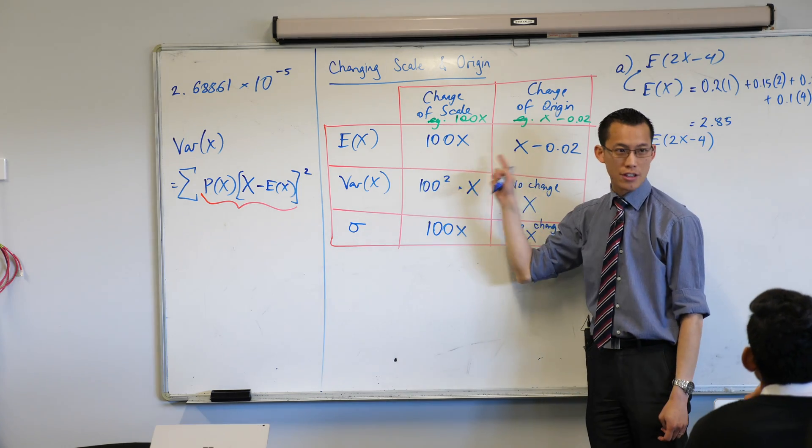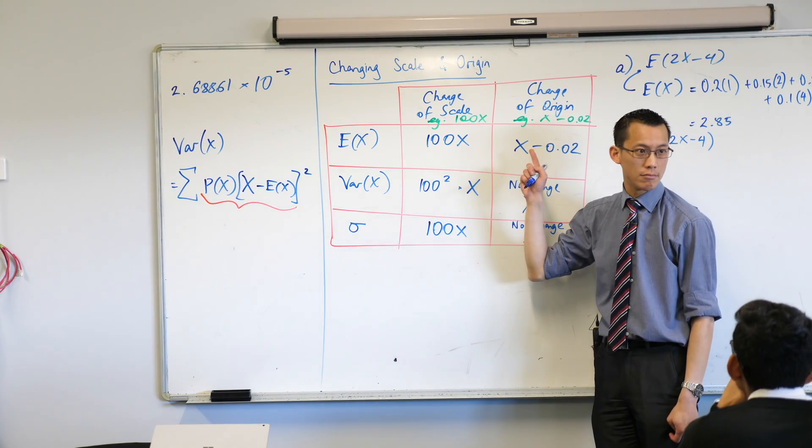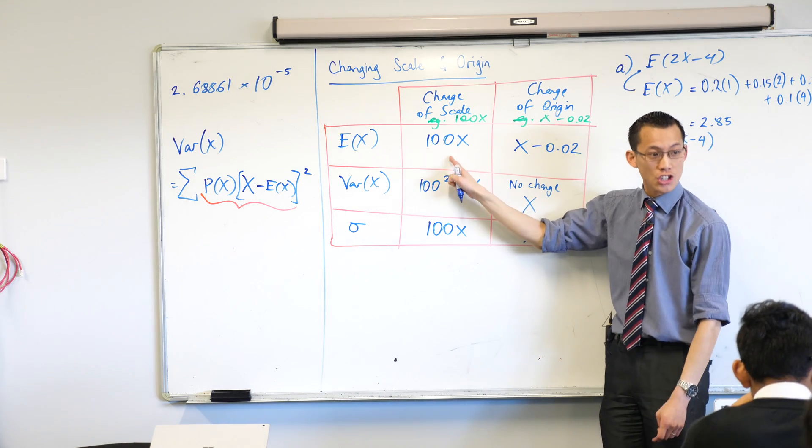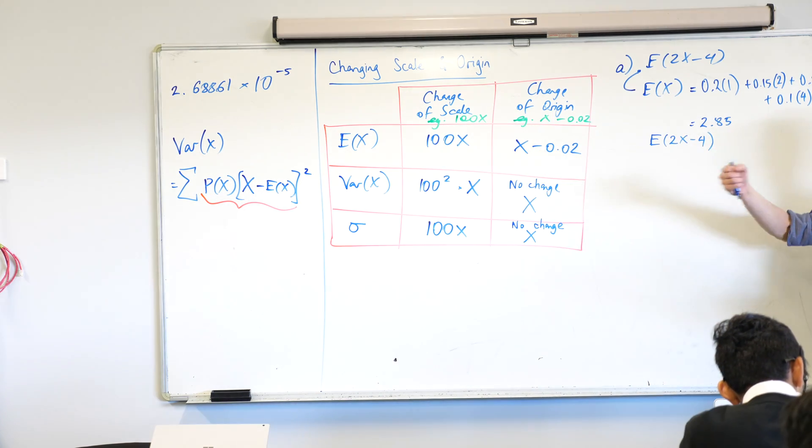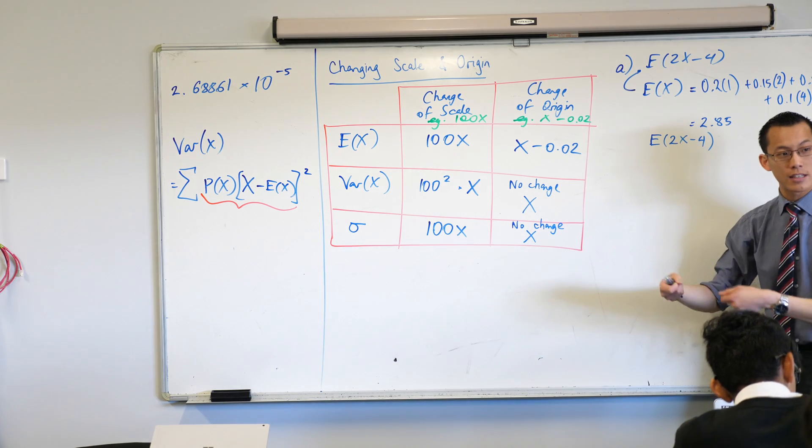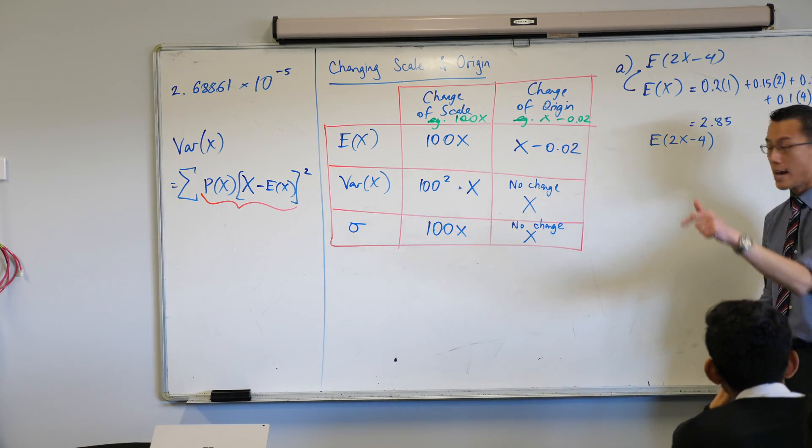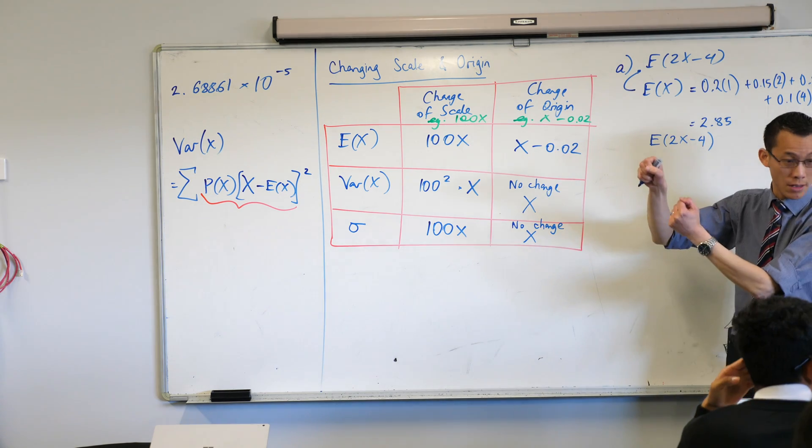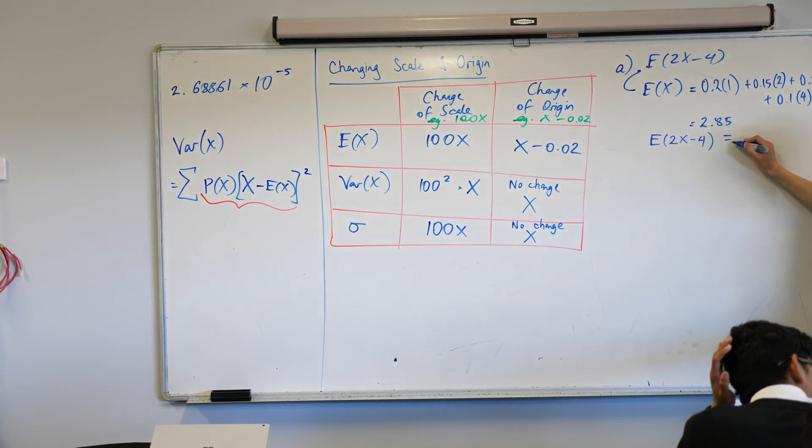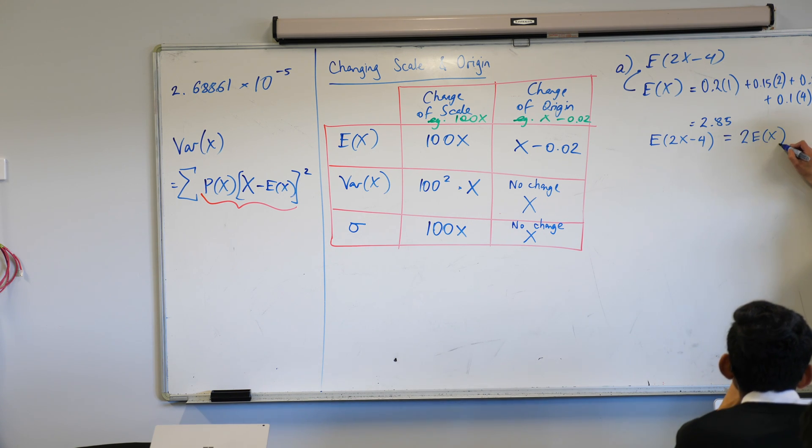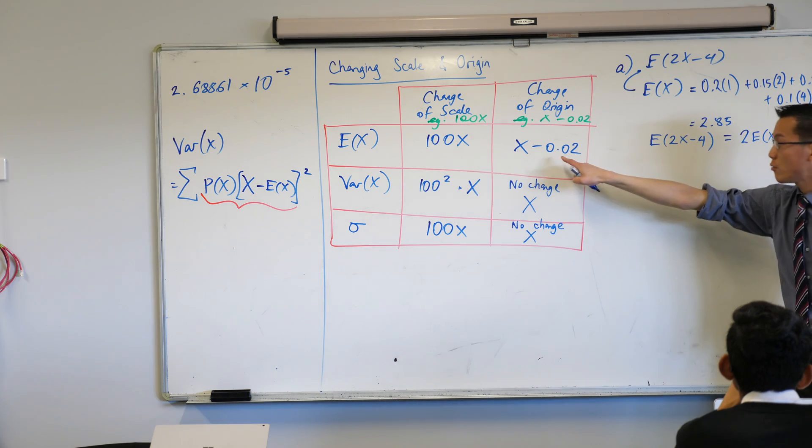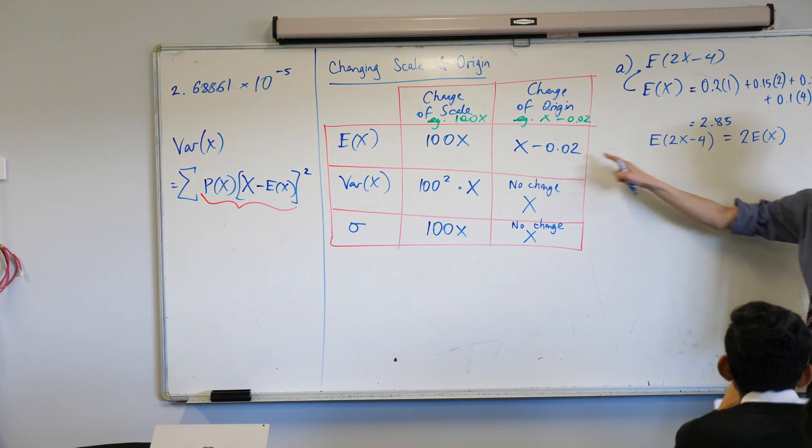Is expected value changed by the change of scale? Yes. It is, right? And it's changed exactly in proportion to however much your scale changes. Is expected value also changed by the change of origin? The answer is yes. It will change by exactly the amount that you move it up or down. So, therefore, this is equal to double, right, that expected value that we started with. Just like we multiplied it. And then, what's the other thing we do? We're not going to subtract 0.02. We're going to subtract, in this case, 4. That's how much they've changed it by.